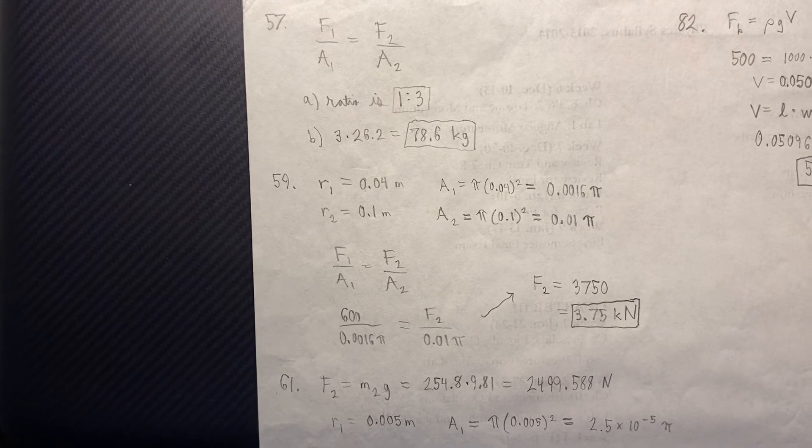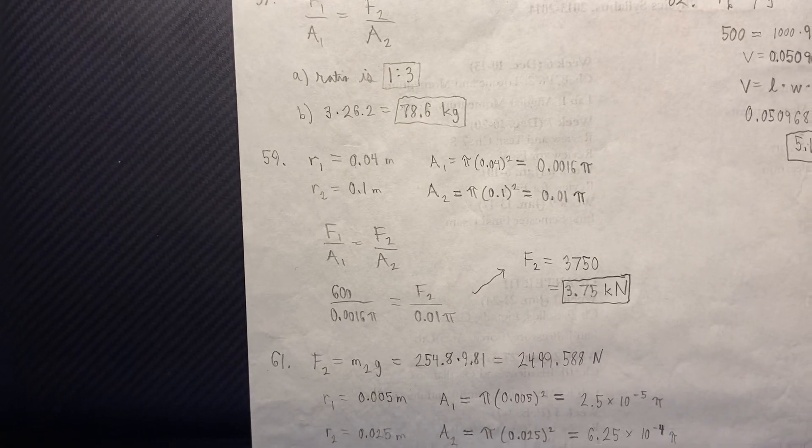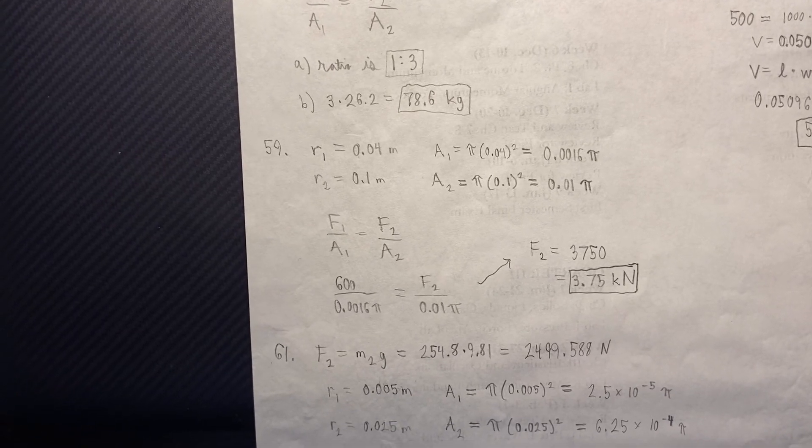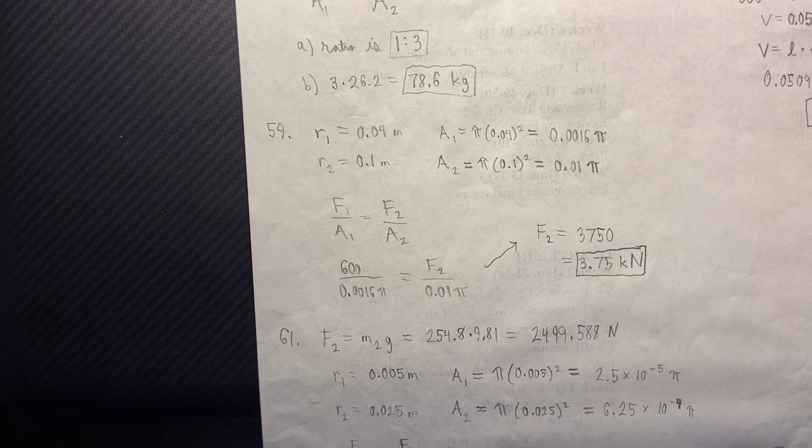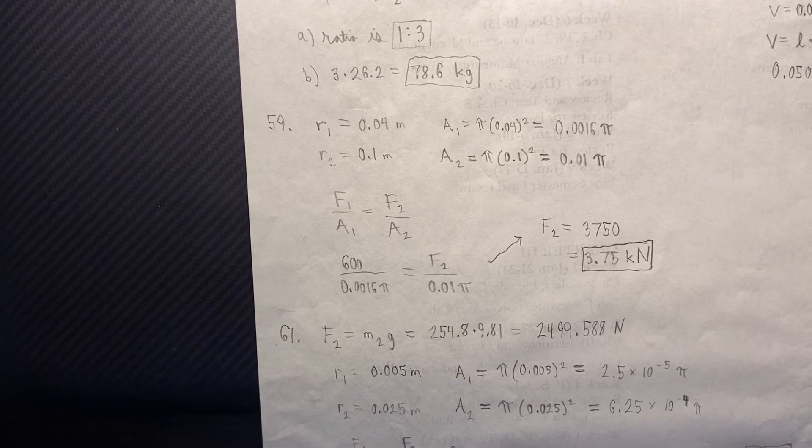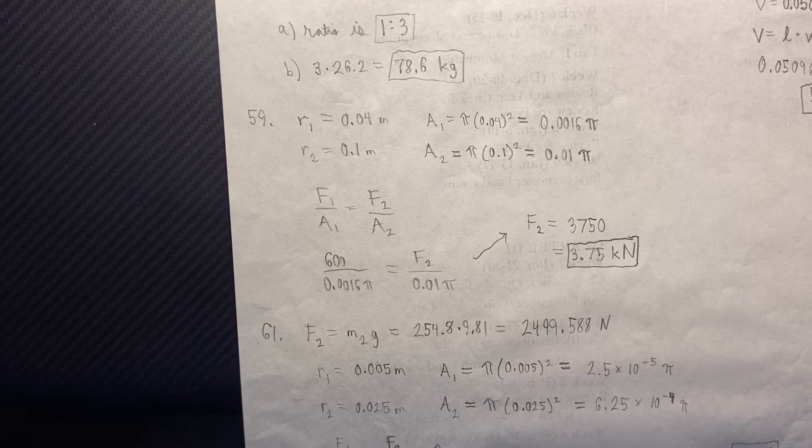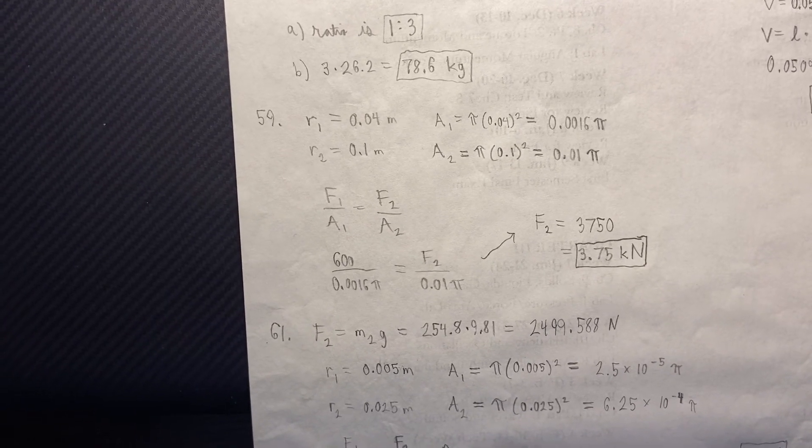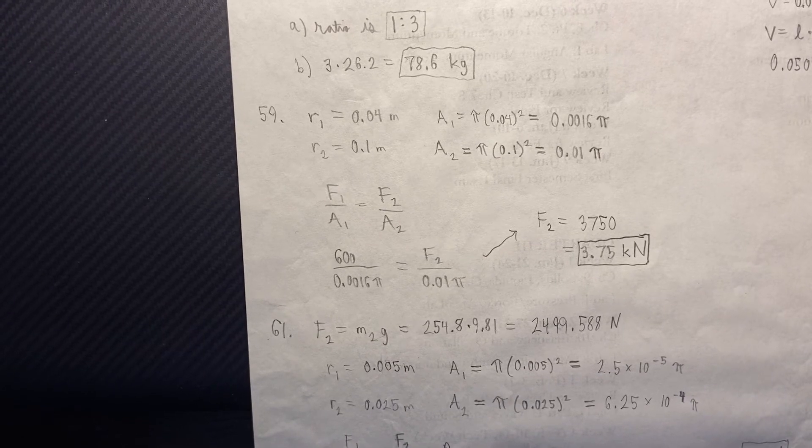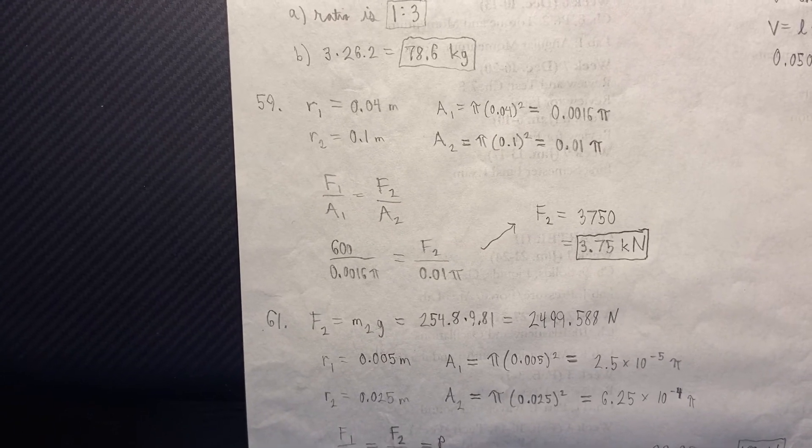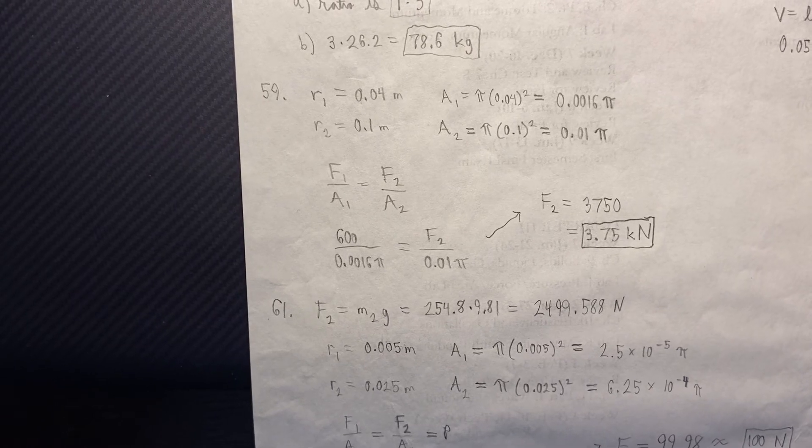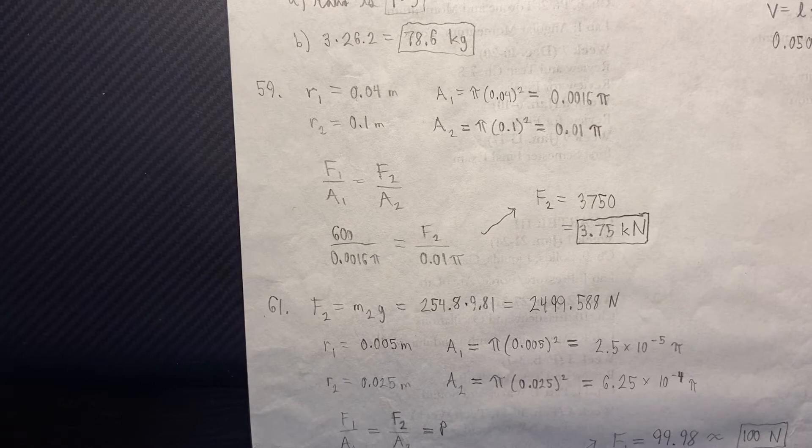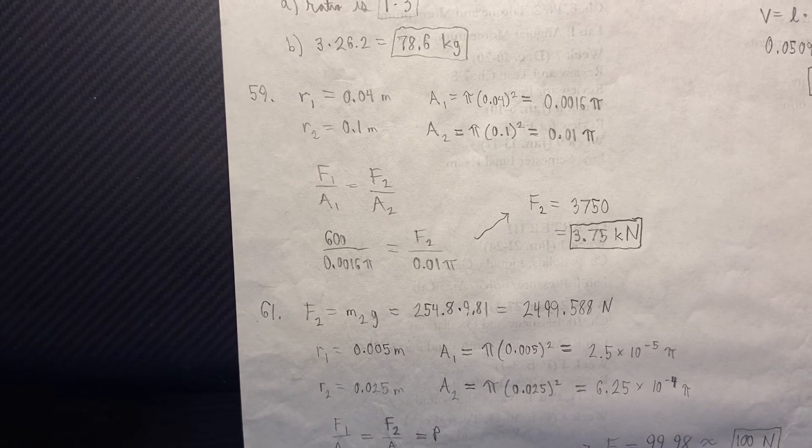Now, in 59, we need to be careful about getting the areas. That's the only tricky part about this particular problem is you've got to remember that it's pi r squared. And so, A1 is 0.0016 pi. And A2 is 0.01 pi. We get that from our given radii. Using Pascal's principle, F1 over A1 equals F2 over A2, plug and chug, and find that the F2 is 37.50, so 3.75 kilonewtons.